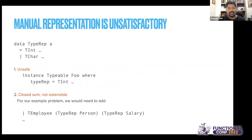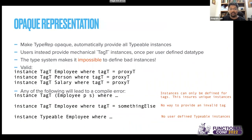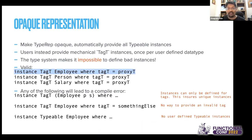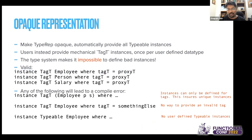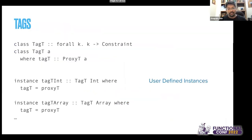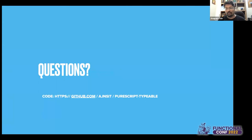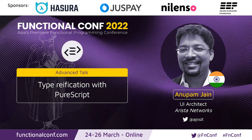The library makes it extremely simple and safe to create TypeReps. You don't have to do the manual representation, which is unsafe and not very extensible. The library provides a TAC-T class, and you define a very minimal instance — the compiler makes it impossible to get it wrong; an invalid instance will not compile. It automatically generates a TypeRep for Boolean or any type using FFI hacks. Please check it out and I'll be happy to take any questions. Thank you so much for sharing about this with us today, Anupam.